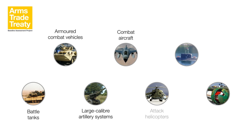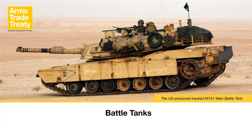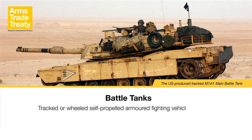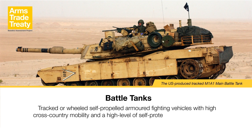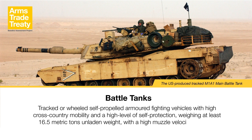The rest of this module introduces the UN Register description at the time of entry into force of the ATT for each category of conventional arms contained in Article 2, Paragraph 1 of the Arms Trade Treaty, namely: battle tanks, armoured combat vehicles, large calibre artillery systems, combat aircraft, attack helicopters, warships, and missiles and missile launchers. It provides the minimum definitions for conventional arms covered by the ATT, as well as guidance for expanding the scope beyond these minimum definitions. Battle Tanks: The definition of battle tanks contained in the UN Register at the time of entry into force of the ATT is tracked or wheeled self-propelled armoured fighting vehicles with high cross-country mobility and a high level of self-protection, weighing at least 16.5 metric tonnes unladen weight, with a high muzzle-velocity direct-fire main gun of at least 75mm calibre.